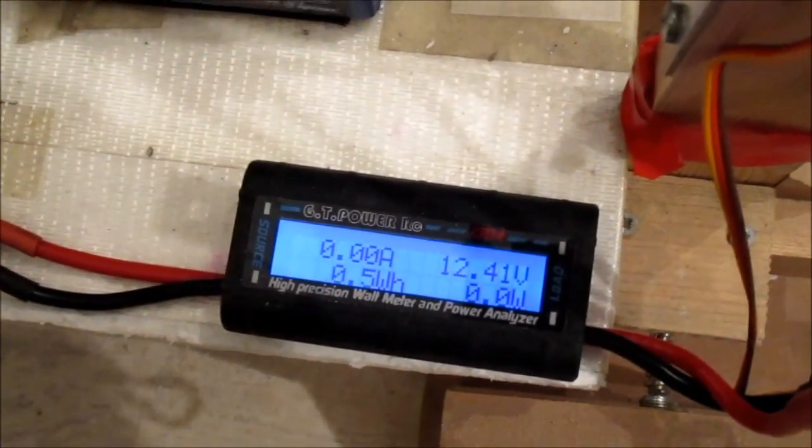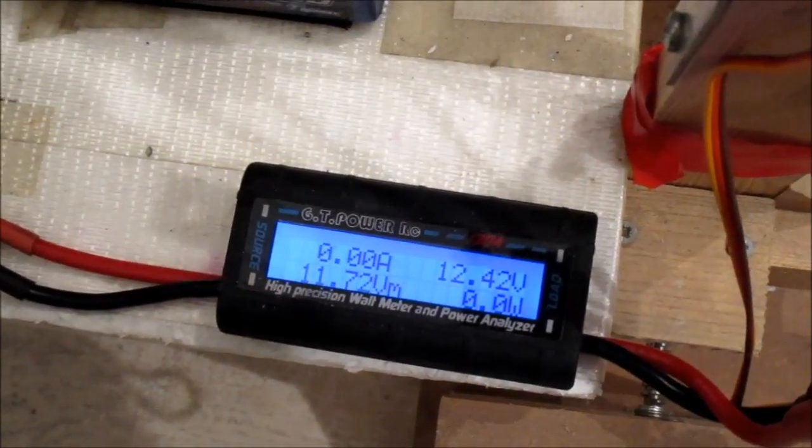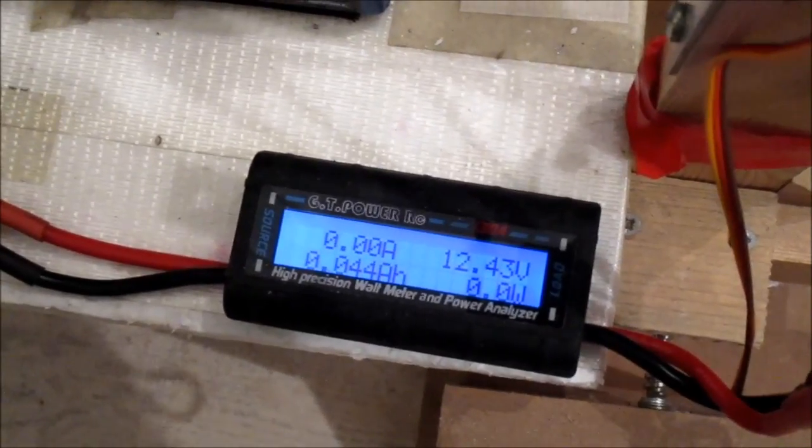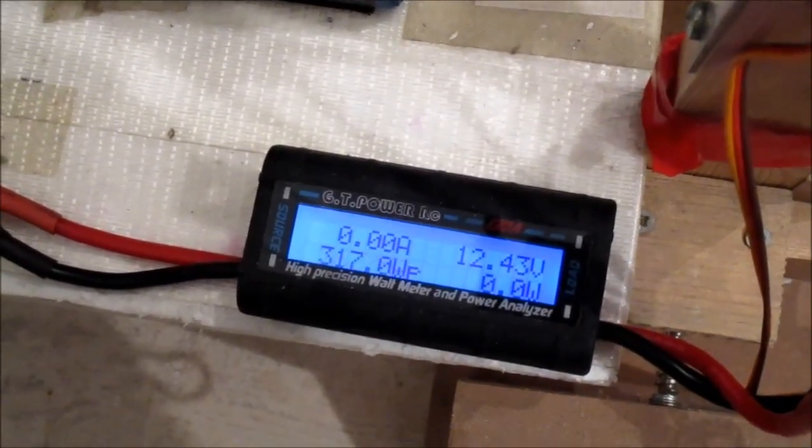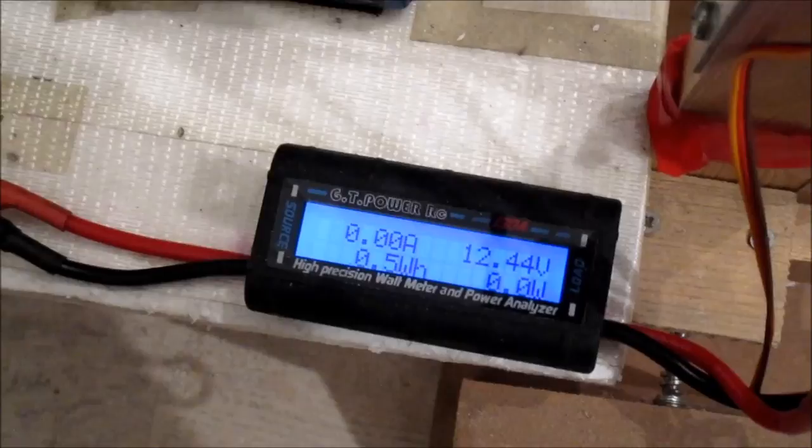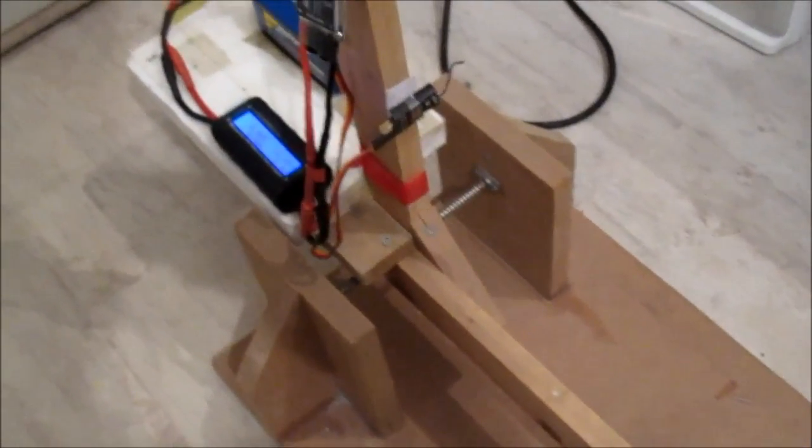There is a bit more thrust than the APC. So let's see what we got on the wattmeter. 26.75 amps and 317 watts, about the same but got about 50 grams more thrust there. That's pretty good.